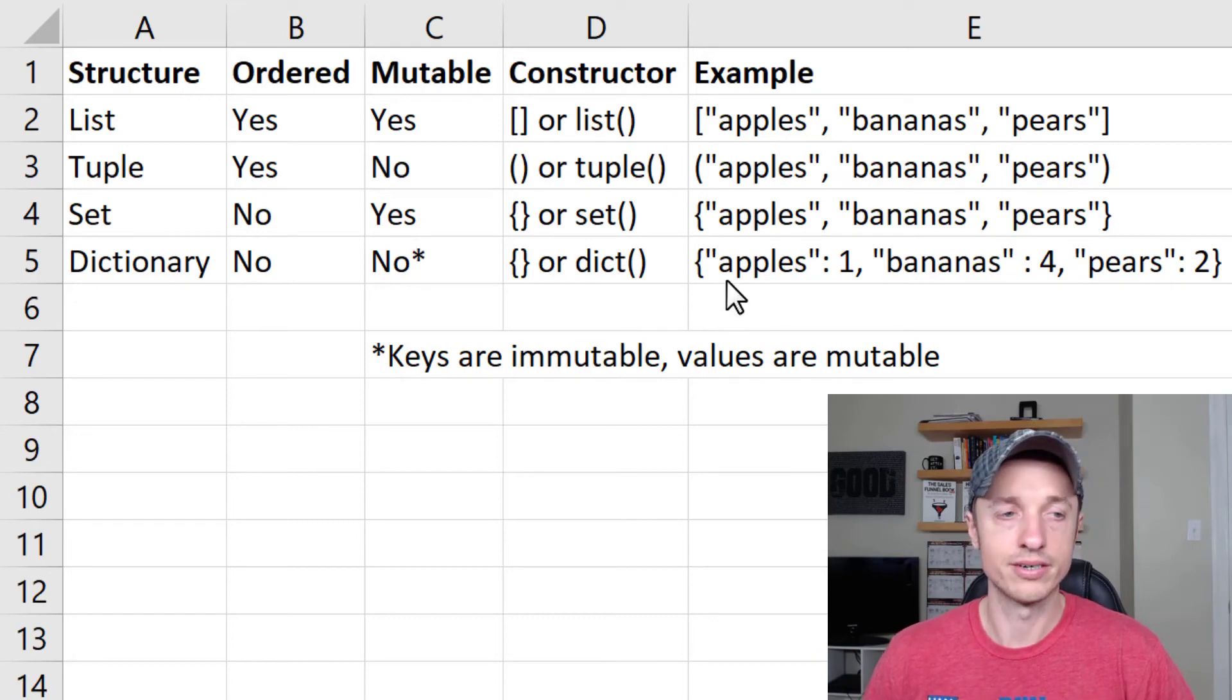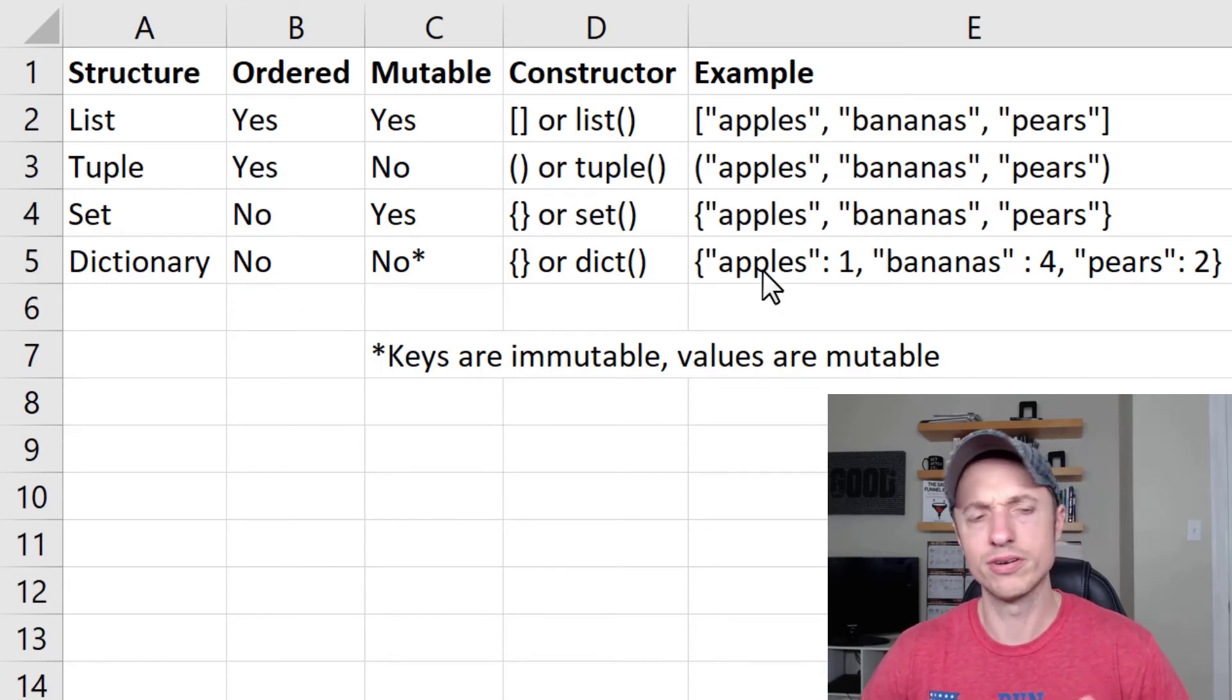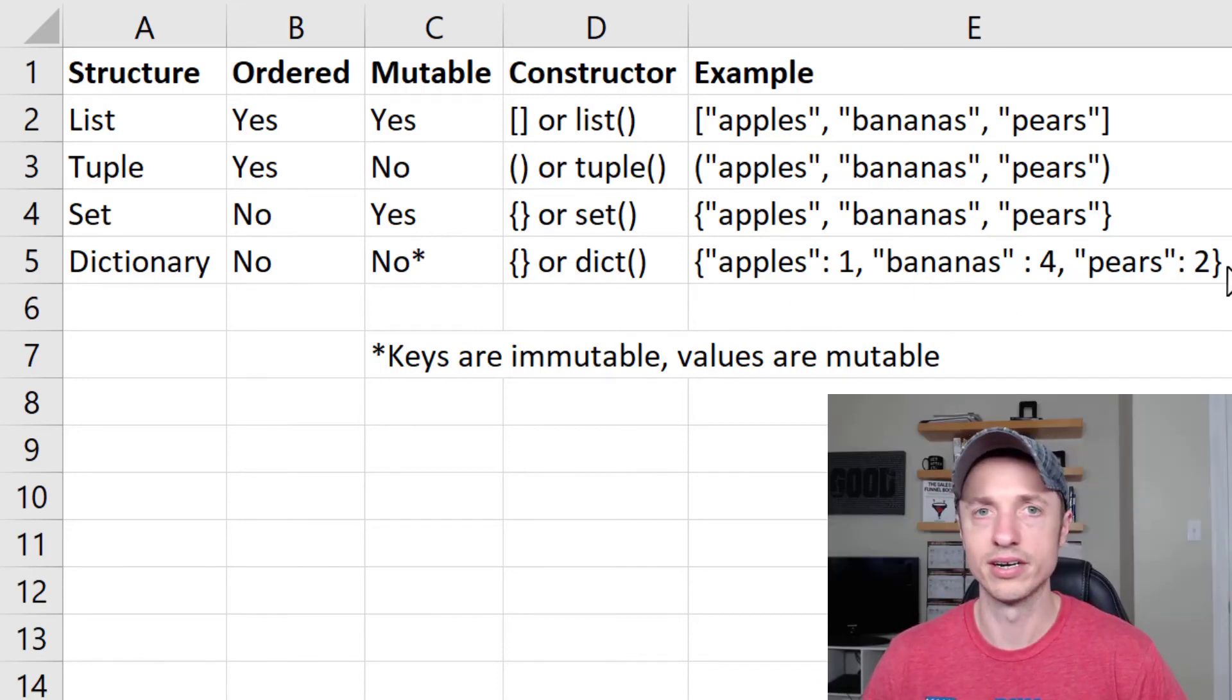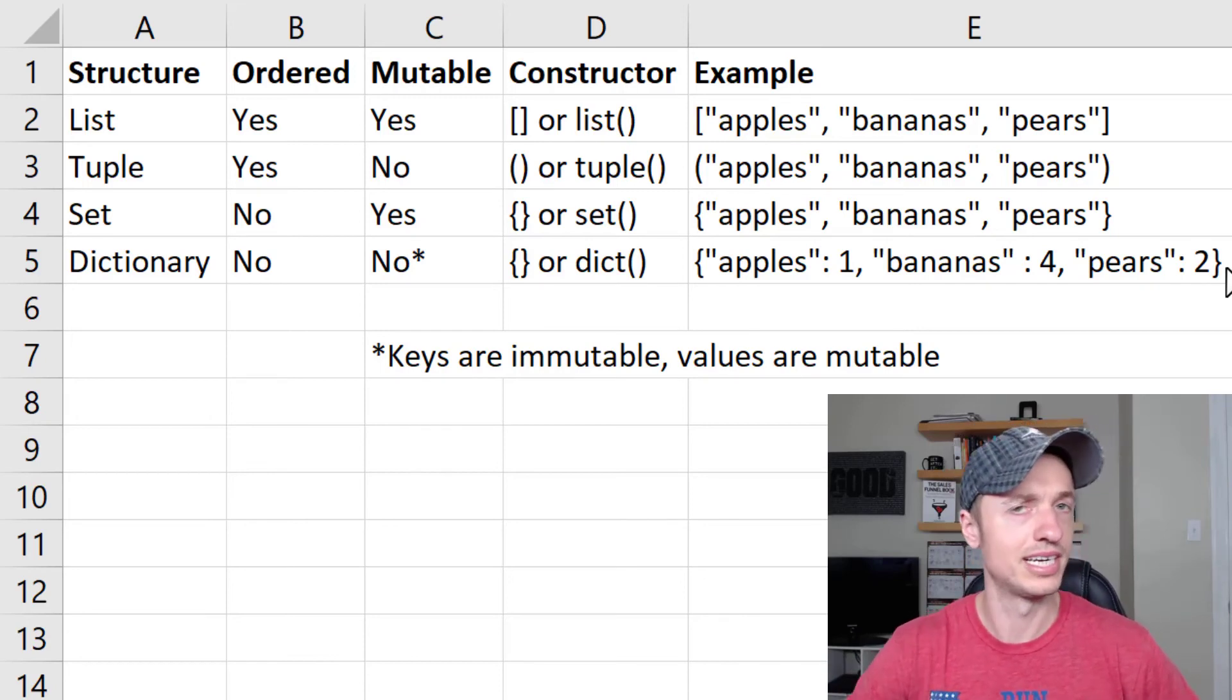And then the constructor for dictionaries are curly brackets as well. But when you start adding the colon with the value, it knows that you're building a dictionary instead of a set. And as far as ordered is concerned, dictionaries are somewhat ordered, you could say, because depending on your keys is how your dictionary is ordered. So it doesn't matter where in the dictionary your keys are. But if you order your keys in a certain way, then your dictionary is in an order, so to say.